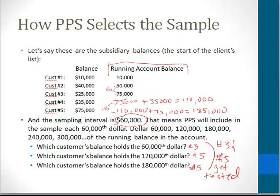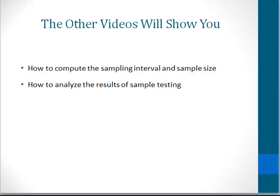You can see that the larger balances are not 100% tested, but customer number five — the biggest balance on the page — is definitely being tested. That's the concept behind sample selection for PPS. And when we get to doing this kind of sampling in IDEA, you see that the IDEA printouts actually explain how the sample items got into the sample — not in red messy writing, but they explain to you how the sample items got into the sample. The other videos regarding PPS sampling show you how to compute the sampling interval and sample size, and how to analyze the results of sample testing.